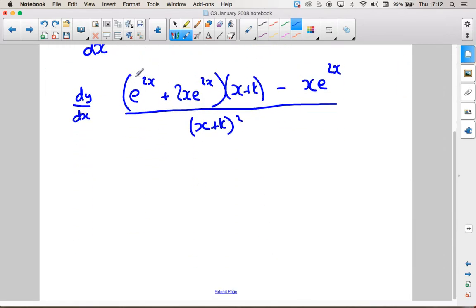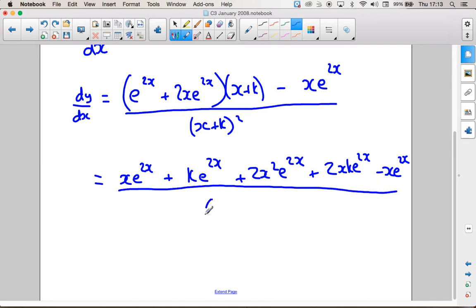So hopefully when we expand these brackets, that should tidy up to what they've got up at the top there. So if we expand these brackets, we're going to get xe to the 2x plus ke to the 2x plus 2x squared e to the 2x plus 2xke to the 2x. Take away that xe to the 2x all over x plus k squared.